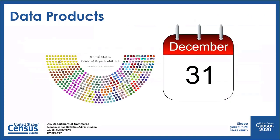Once we have collected all of the responses, we need to tabulate the data. We've produced two legally mandated products. We have the apportionment counts that are delivered to the President no later than December 31st of 2020. The next product we tabulate are the redistricting data files — the apportionment counts for each state — delivered on a state-by-state rolling basis beginning toward the end of February and finishing with all states by March 31st of 2021. More products will be developed and released through 2023.